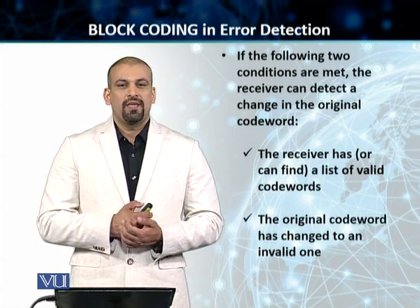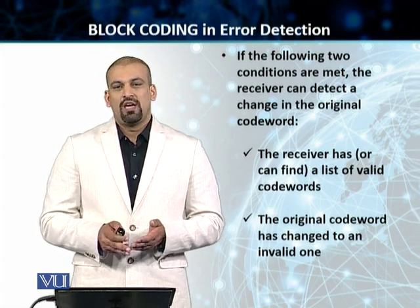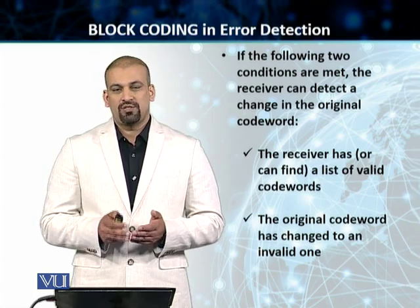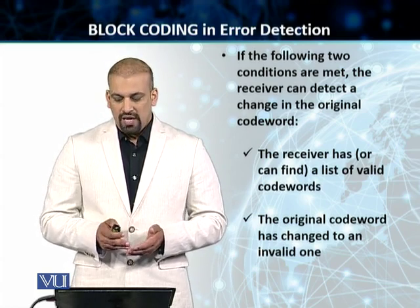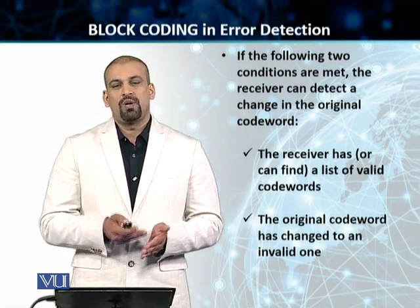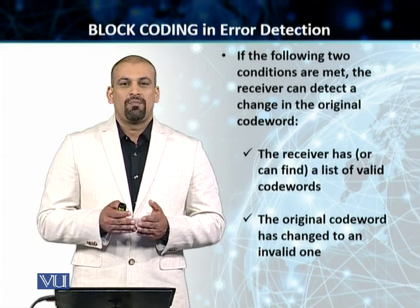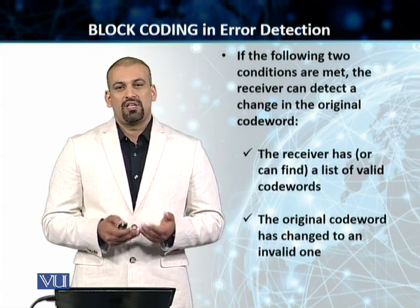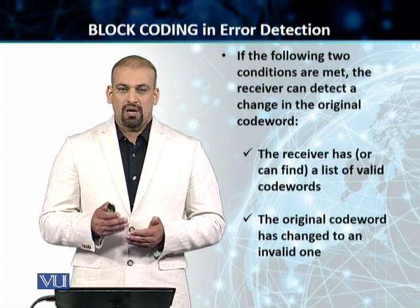Block coding and error detection works if the following two conditions are met — the receiver can actually detect the error if: first, the receiver has a list of all the valid codewords that are available; and second, if the original codeword has changed to an invalid one. We are adding those redundancy bits to our original data words, and the resulting codeword is what the receiver checks to see if it is corrupted or not.